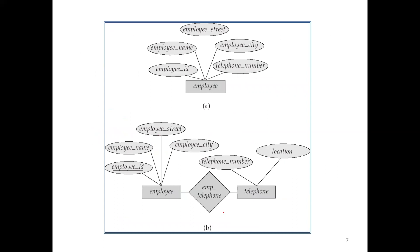In an ER diagram, an entity like Employee is represented with a rectangular box. The attributes of the employee entity — employee ID, employee name, employee street, employee city, and telephone number — are represented using oval shapes or ellipses connected to the entity with lines.